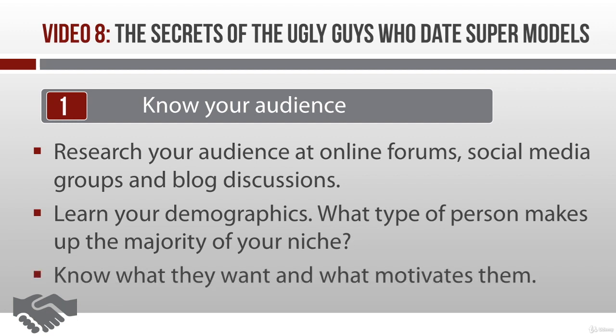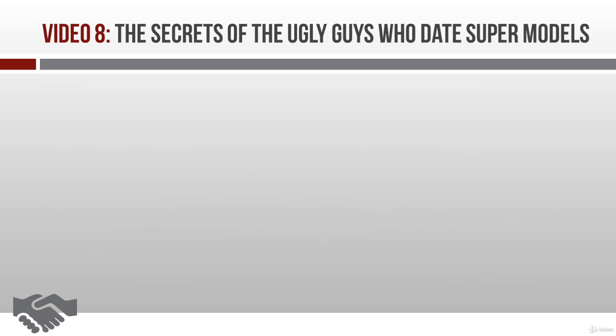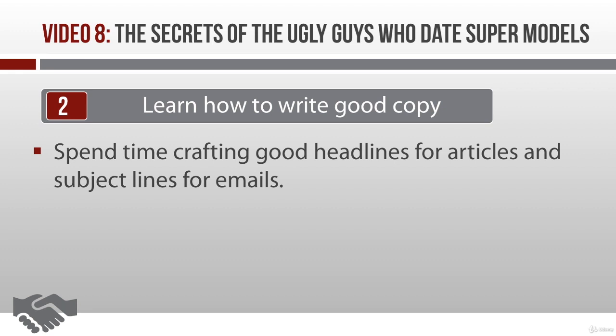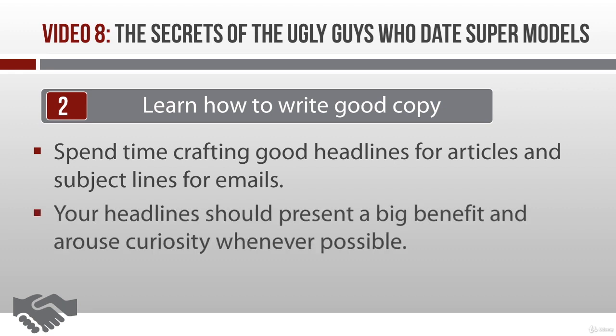Learn what your audience wants, know what motivates them, know what pulls their emotional strings, and you'll have them eating out of the palm of your hand. The next thing to learn is how to write good copy, starting with crafting good headlines for articles and subject lines for emails. These headlines should present a big benefit and arouse curiosity, because a headline is designed to get attention, and if it doesn't, no one's going to read whatever else you have to say.